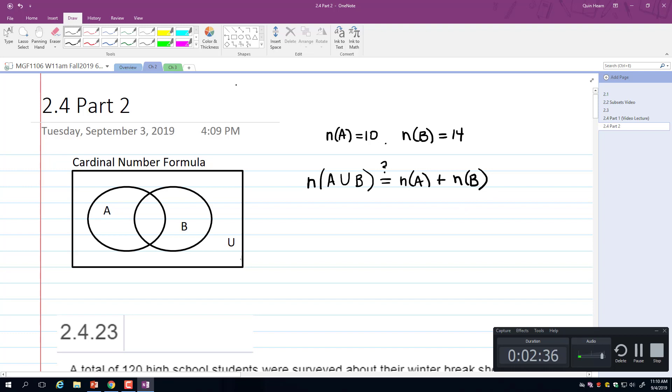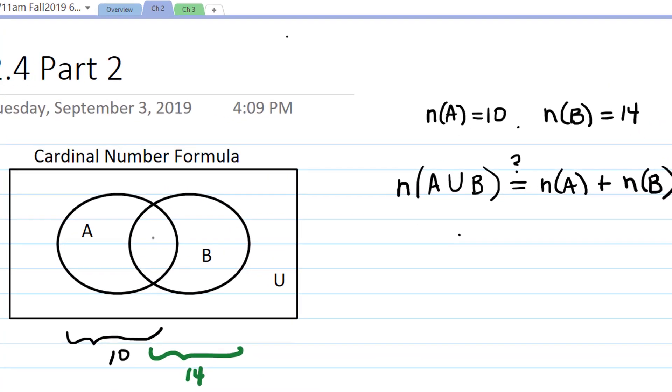So, for example, it's possible that there are 10 in A and 14 in B and nothing in the intersection between them. So this would look like 10 and 14 and 0 in those regions. If their intersection is empty, then yes, the total number that's in A union B would be 24.